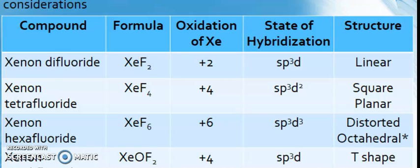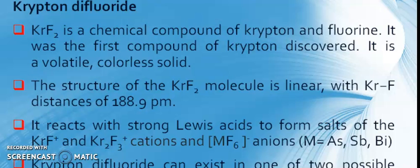So you know, XeF2 has a +2 oxidation state, hybridization sp3d, linear shape. XeF4 has +4 oxidation state, sp3d2, square planar. XeF6 has +6 oxidation, sp3d3, distorted octahedral. XeO2F2 has +4 oxidation, sp3d2, T-shape. XeO3F2 has +6 oxidation state, sp3d2, square pyramidal. XeO3 has +6 oxidation, sp3, pyramidal.